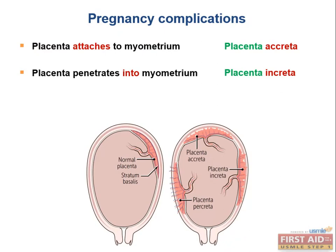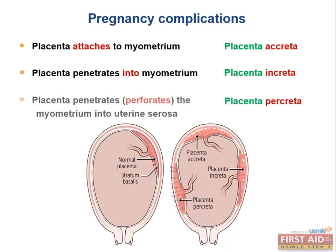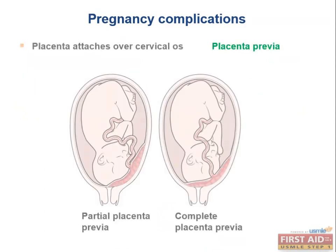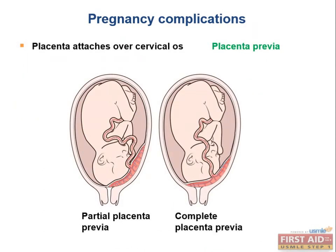Placenta increta is when the placenta penetrates into the myometrium. Placenta percreta is when the placenta penetrates through the myometrium into the uterine serosa. In order of severity: accreta, increta, percreta — percreta is worse than increta, which is worse than accreta. Placenta previa is when the placenta attaches over the cervical os, a very potentially dangerous complication during childbirth. The USMLE wants you to know this presents as painless third trimester bleeding.